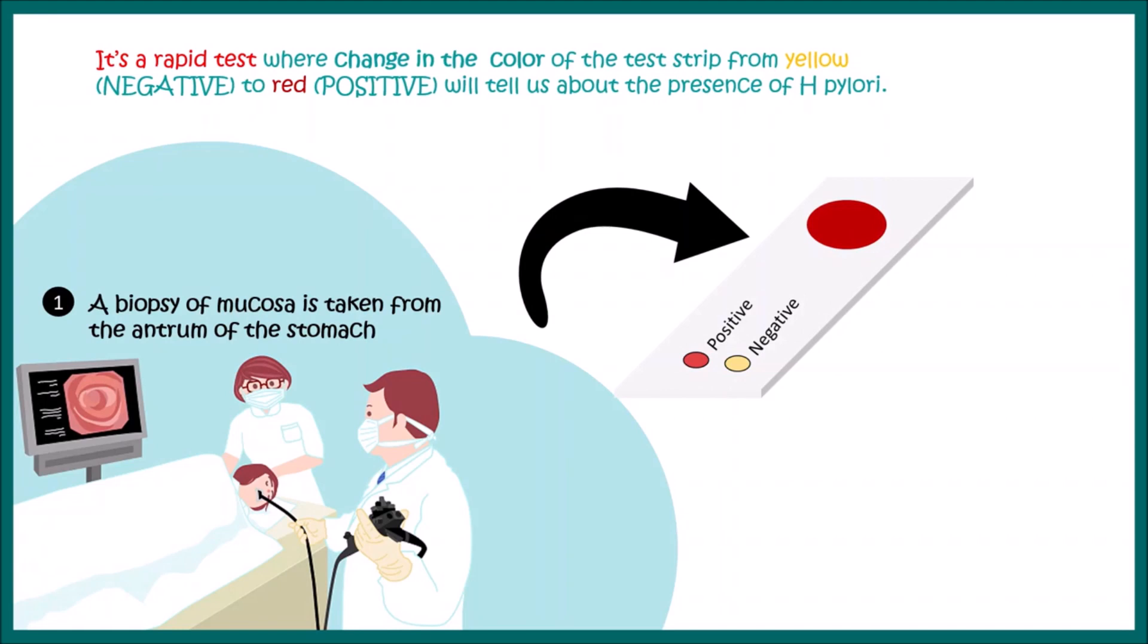If the color is red, that means Helicobacter pylori is present. If the color is yellow, Helicobacter pylori is absent and the test is negative. Let's try to understand the basis of this color change, why the color is changing, and what it tells us.